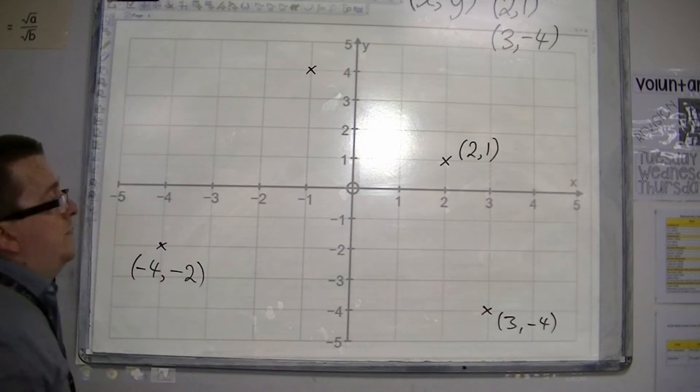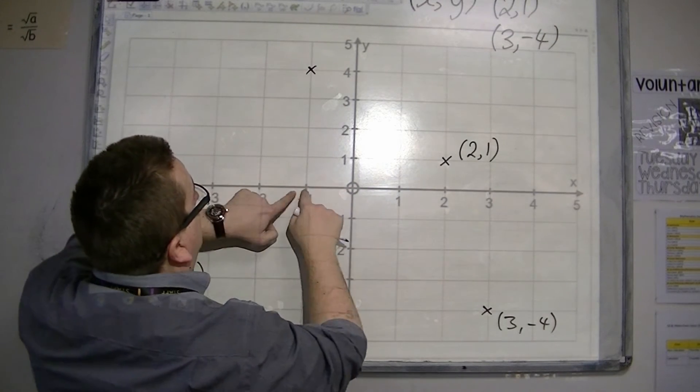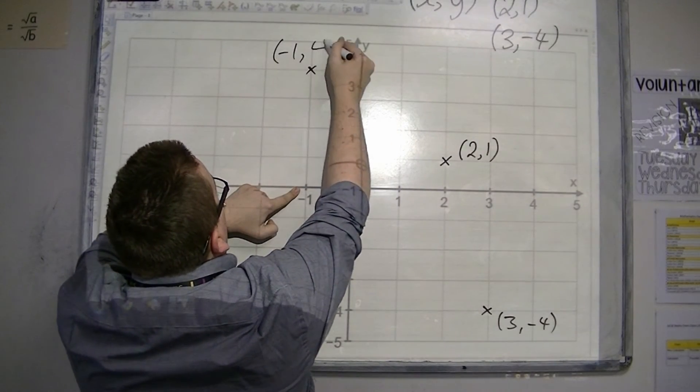This point will be minus 1 on the x-axis and 4 on the y-axis. So (-1,4).